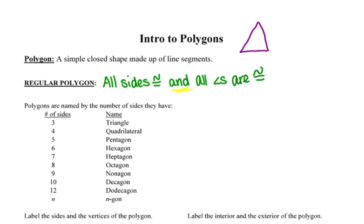Polygons are named by the number of sides they have. For instance, a three-sided polygon is a triangle, whereas a six-sided polygon is a hexagon and an eight-sided polygon is an octagon. You should know the names of the polygons in that list. If we have a polygon with a number of sides greater than 12, we would call that an n-gon. For instance, a polygon with 23 sides would be a 23-gon.